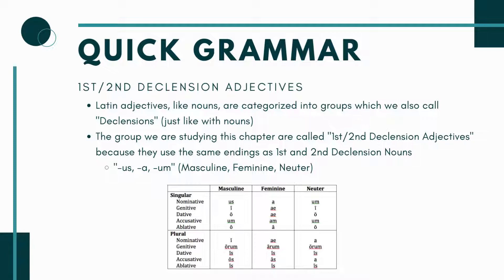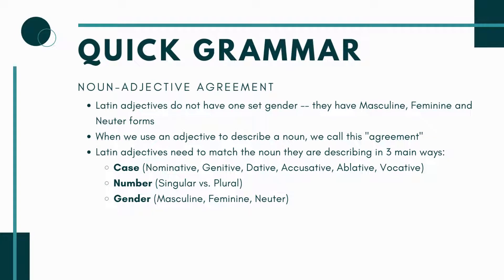When using adjectives, you use a process called noun-adjective agreement. Latin adjectives don't have one set gender — they're kind of like chameleons; they match whatever they're going with. So adjectives can be masculine, feminine, and neuter — they have those three different forms. This is the opposite of nouns, which have one set gender. For instance, the word girl will always be feminine in Latin, but for adjectives that's not the case.